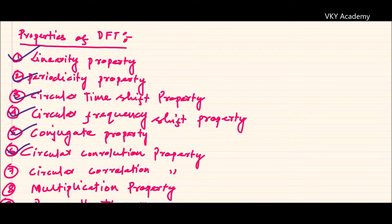We discussed the convolution property — that is, the linear convolution property — in Z-transform. Similarly, in discrete Fourier transform we have the circular convolution property. Why it is called circular convolution property, and what is the need of finding circular convolution in DFT, we will discuss in our upcoming lecture.